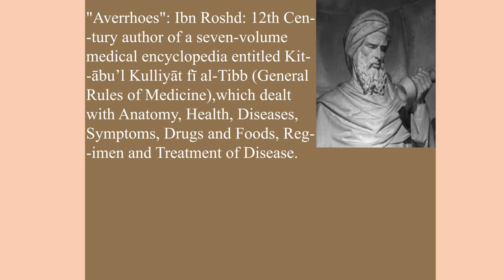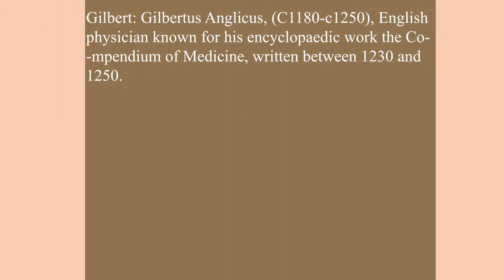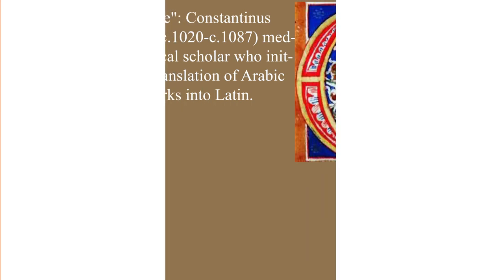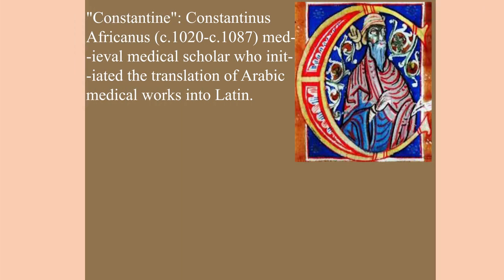Averroes is known as Ibn Rushd, a 12th century author of the seven-volume medical encyclopedia Kitab al-Kulliyat fi al-Tibb, dealing with anatomy, health, disease, symptoms, drugs, food, and treatment. Gilbert, or Gilbertus Anglicus, was an English physician known for his encyclopedic Compendium of Medicine written between 1230 and 1250. Constantine refers to Constantinus Africanus, a medieval medical scholar who initiated the translation of Arabic medical works into Latin.